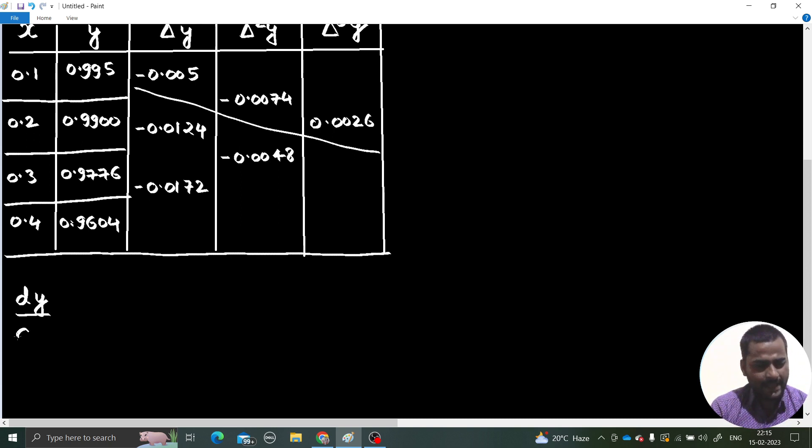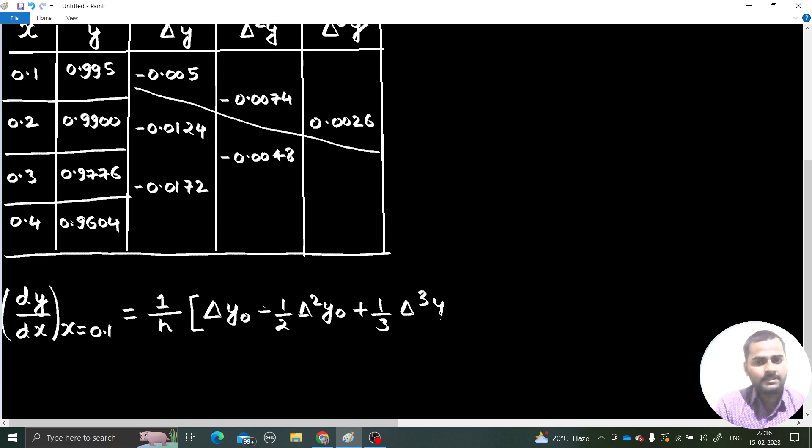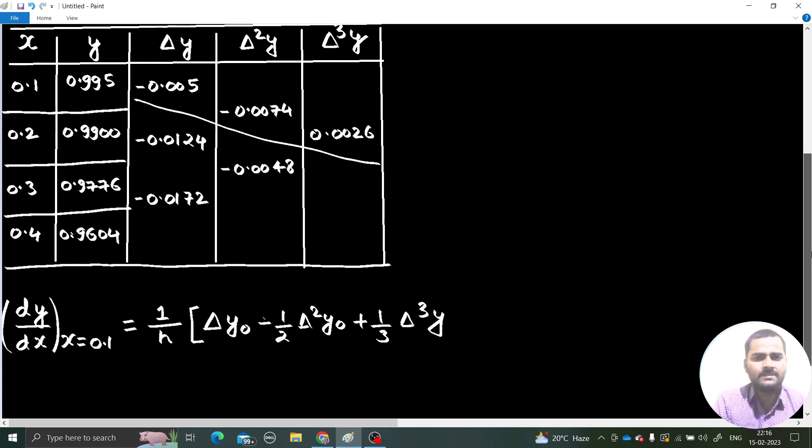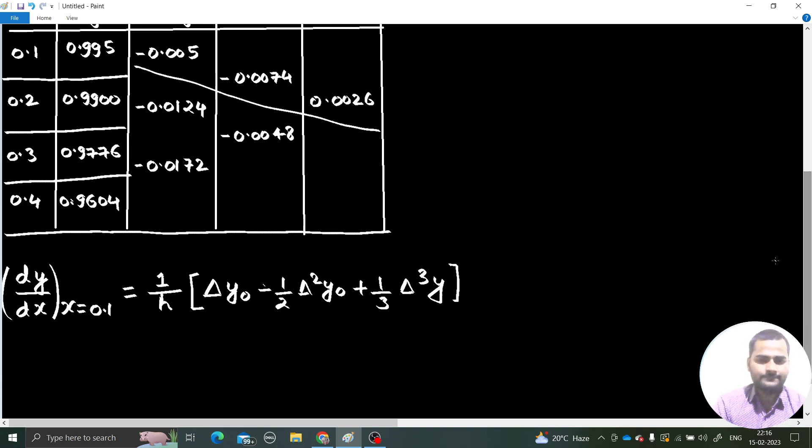And what will be the formula for calculating the derivative? dy by dx at x equals to 0.1. Formula is simple: 1 by h, and first I am writing the general formula. 1 by h times [Δy₀ minus half Δ²y₀ plus 1/3 Δ³y₀]. In this question, we need only till third difference because higher differences will not be there. Now, what is the value of h? h is the difference in x values, and that as you can see is 0.1.